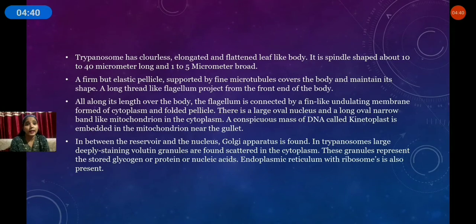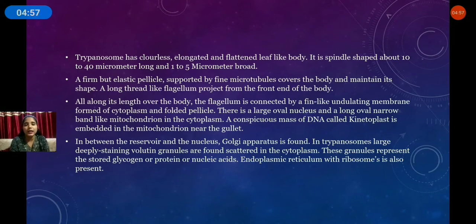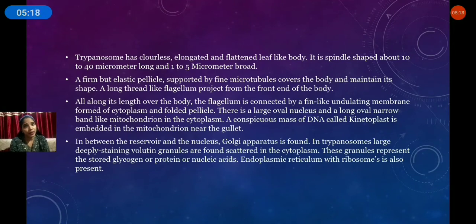Trypanosomes have a colorless, elongated, and flattened leaf-like body. It is spindle-shaped, about 10 to 40 micrometres long and 1 to 5 micrometres broad. A firm but elastic pellicle supported by fine microtubules covers the body and maintains its shape. A long thread-like flagellum projects from the front end of the body.